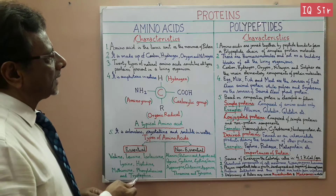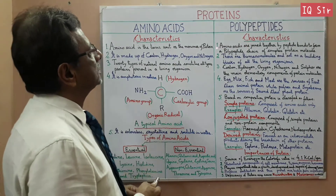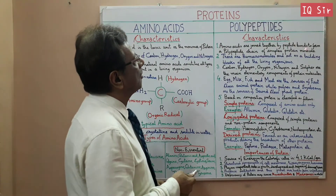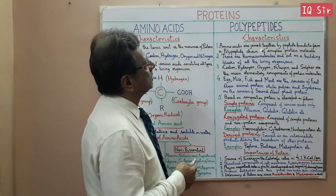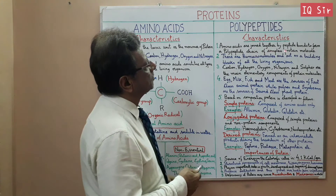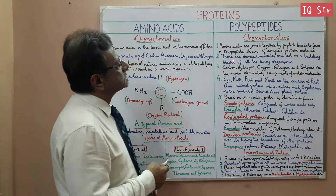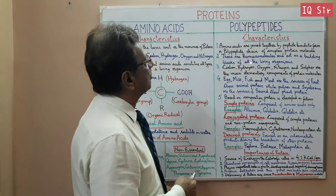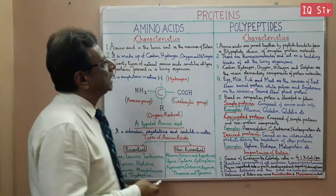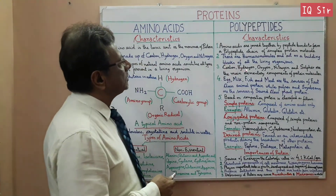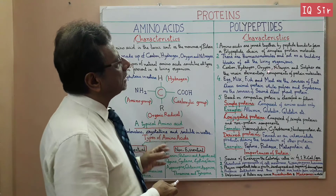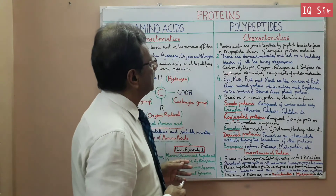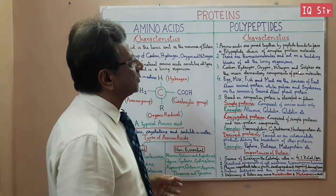Now we come to the polypeptide. The first point is that Amino Acids are joined together by peptide bonds to form a polypeptide chain of complex protein molecules. These are biomolecules and act as a building block of all organisms. The elements are carbon, hydrogen, oxygen and nitrogen; besides, sometimes sulfur is also a main element component of protein molecules.